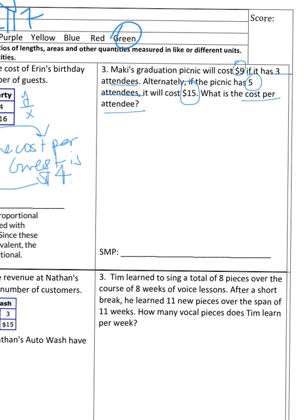So since it's asking a question in a complete sentence, you will also answer in a complete sentence, and you annotate. So our first ratio is $9 to 3 guests, and our second ratio is $15 to 5 people. Now let's compute the unit rate.